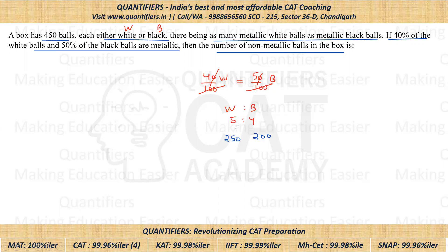Now let's figure out how many metallic white balls there are. Metallic white balls are 40% of 250, which is 100. Metallic black balls are 50% of 200, which is also 100. So we get 200 metallic balls in total.